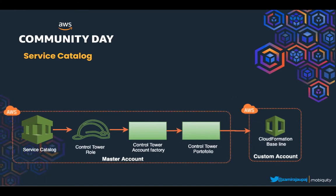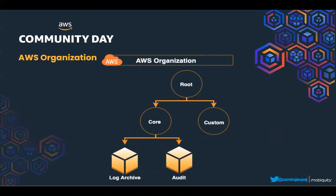Service Catalog allows you to provision portfolios and add products based on requirements and a specified budget. Control Tower creates its own portfolio with an already associated product called AWS Control Tower Account Factory. By default there is no budget specified, however you can specify the budget and what kind of resources you are going to build and who can access to build them. AWS Organizations, another service of Landing Zone, is used to create an account organization structure into groups and apply service control policies to each group to ensure your accounts stay within your organization's access control guidelines. Under root, there are two main groups: Core and Custom. Archive and Audit are part of Core, but you can also add more accounts under Core and under Custom.